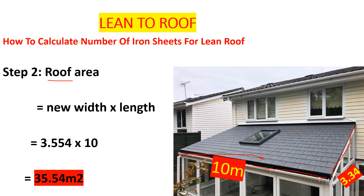I'm calling the rafter length our new width, and then we multiply by the length. So our new width is 3.55 meters and our length here is 10 meters — from this point here up to that point there is 10 meters. If we multiply those, we get 35.54 square meters. That is the area for which we want to calculate the number of iron sheets.